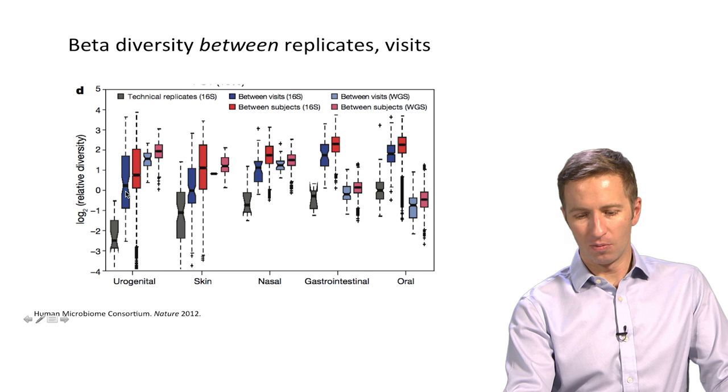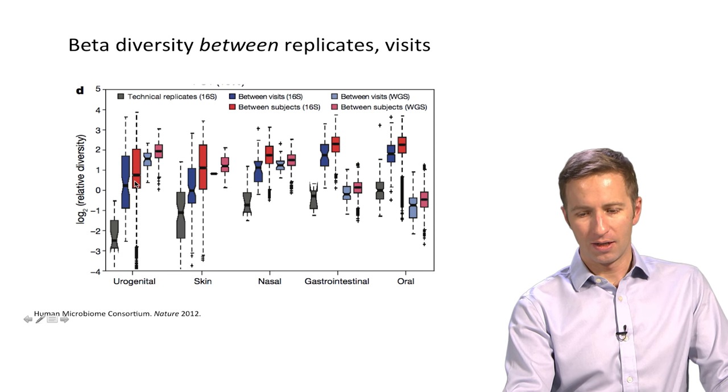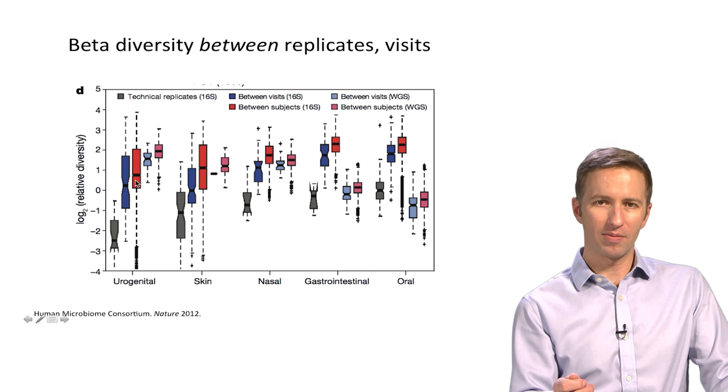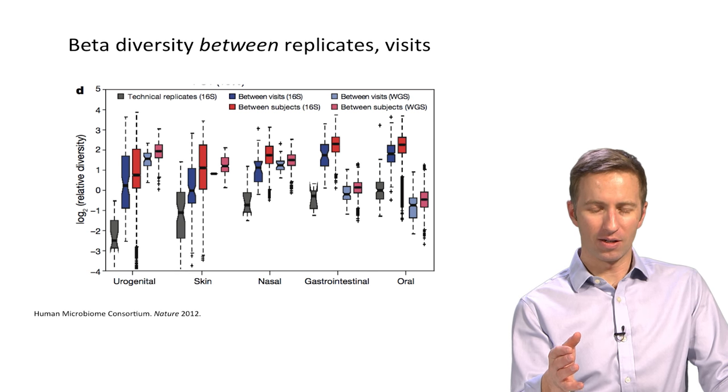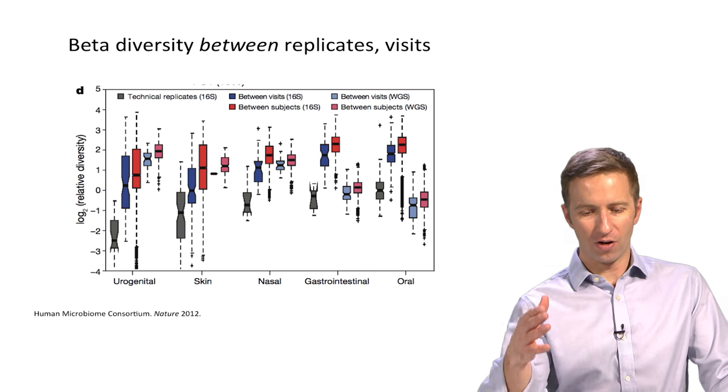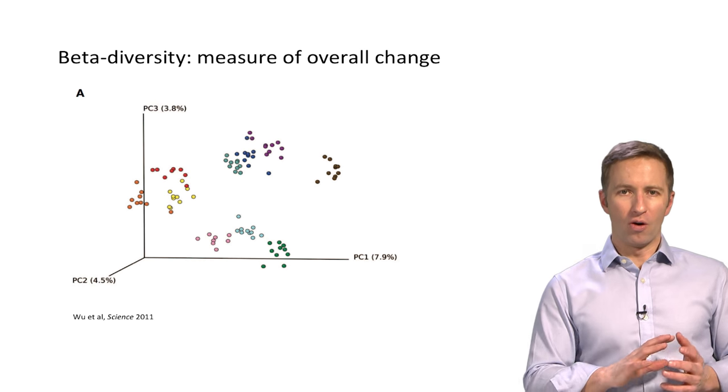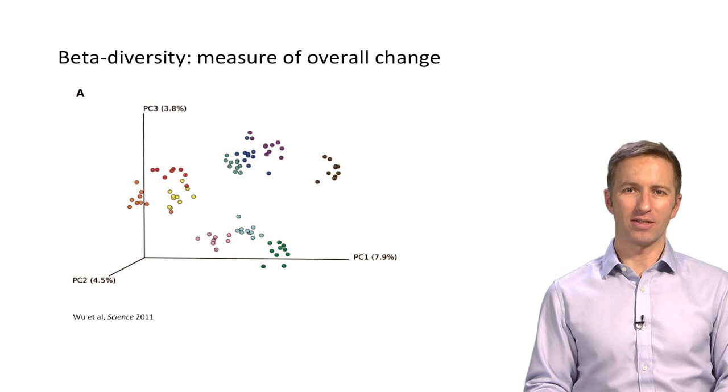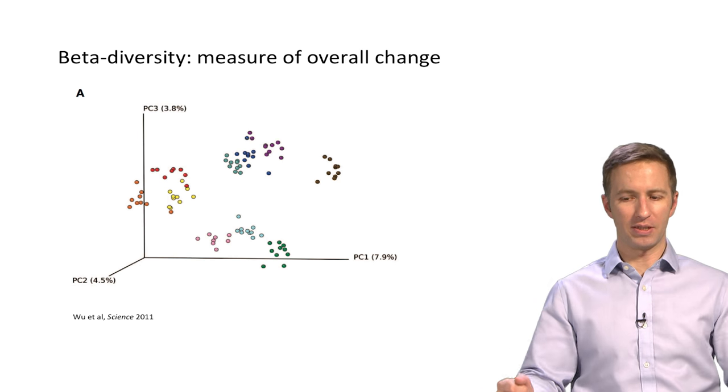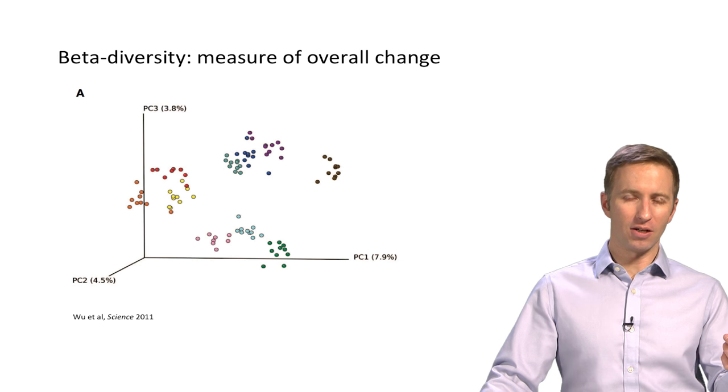And then between visits is a little bit lower than between subjects. So the same subject over time tends to be less different from himself or herself than from another person. Beta diversity is a measure of the overall change in the whole community. That's what it's intended to be. So it takes into account the whole distribution of species and can be run on species, OTUs, genus level,